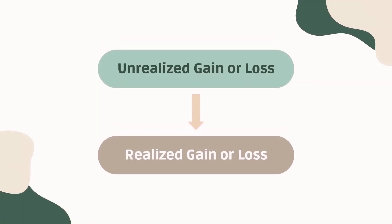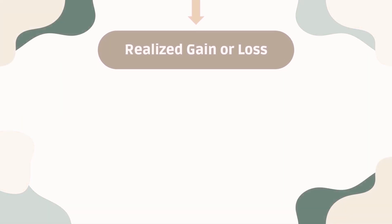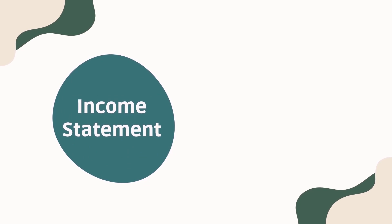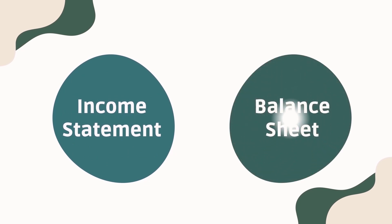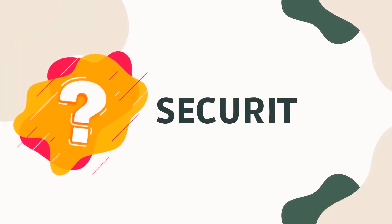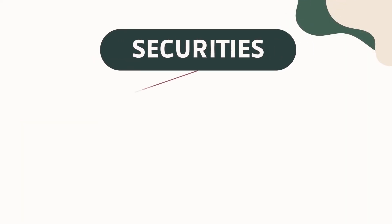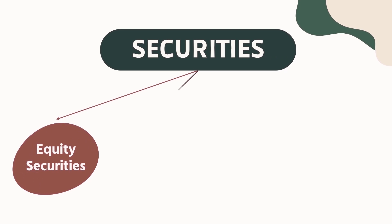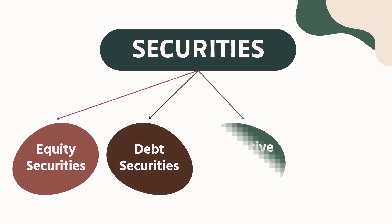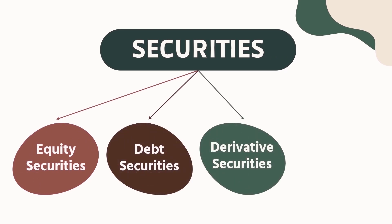What if it transforms into realized gain or loss? And where do they record it — income statement or balance sheet? Securities cover a wide range of assets. They are divided into broad categories: equity securities, debt securities, derivatives securities, and hybrid securities.